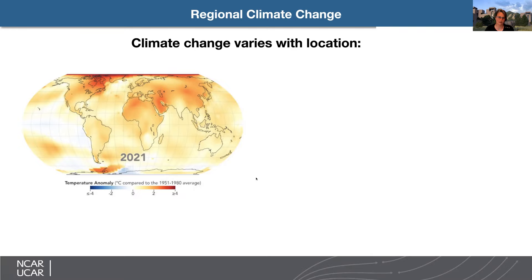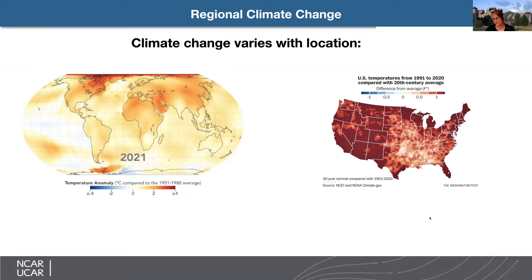These temperature changes vary with location. Showing temperature anomalies for 2021 compared to a pre-industrial average, the polar regions — particularly the northern polar regions — warm the most. Land areas are warming more than oceans, and the northern hemisphere is warming more than the southern hemisphere. Within the United States, the western states are warming significantly more than the central and eastern regions.